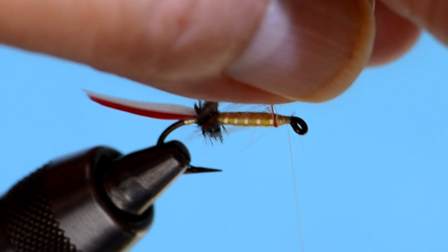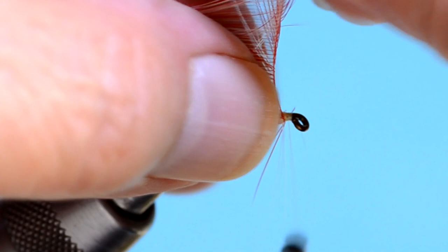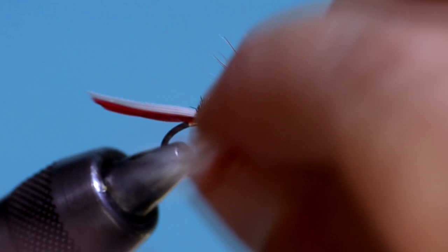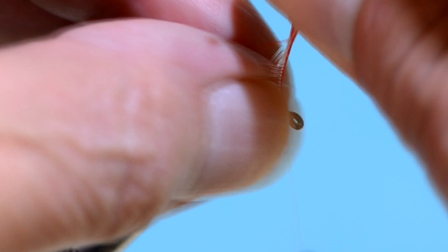Rather than folding the hackle ahead of time, I just stroked the fibers back as I wind. I always thought of this fly as a candy cane fly. It was difficult to take this fly seriously. And for brown trout, you probably shouldn't. But for brook trout, it's great.